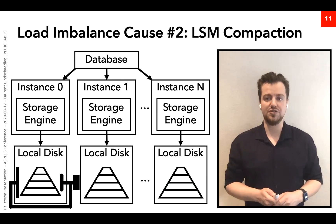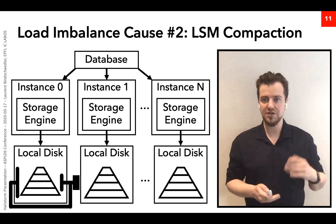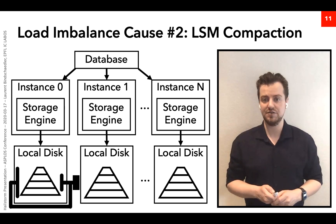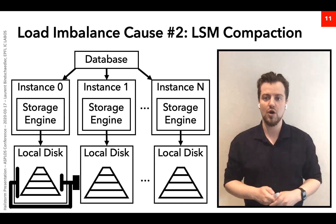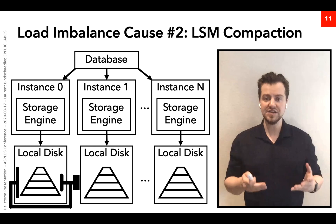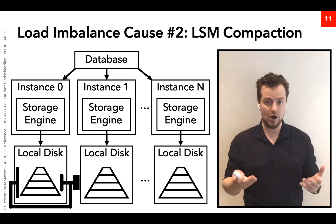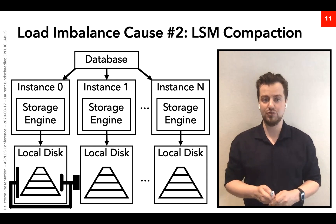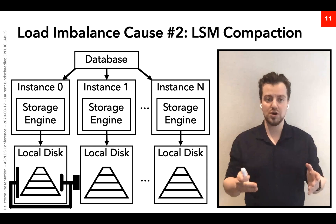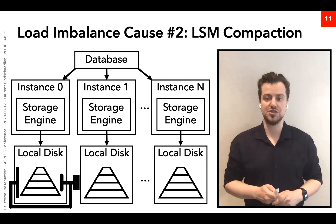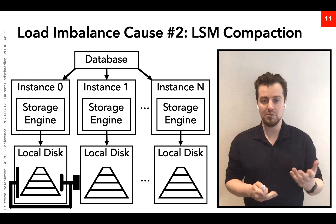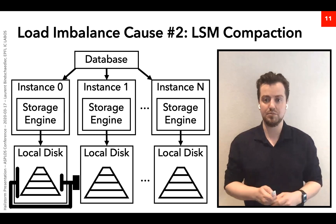The second cause of load imbalance is background operations. We're mostly interested in LSMs — log-structured merge trees — a type of storage engine very popular for large data sets that do not fit in memory. LSMs are optimized for write-heavy workloads by writing data in a log, but they also execute background operations called compactions to maintain the on-disk data structure and allow fast reads. Compactions involve sorting and merging files and are both CPU and IO intensive.